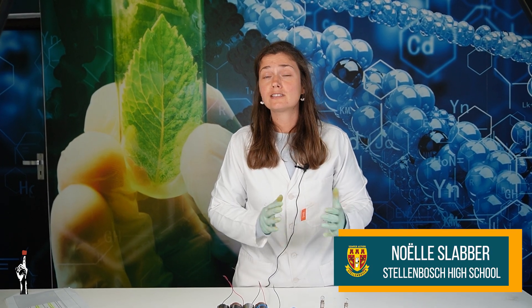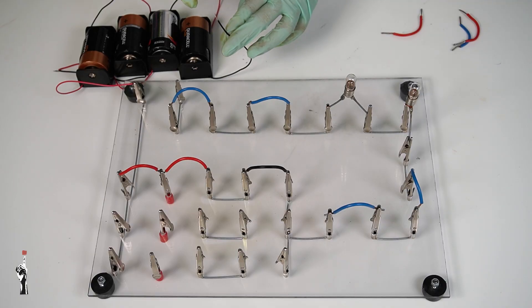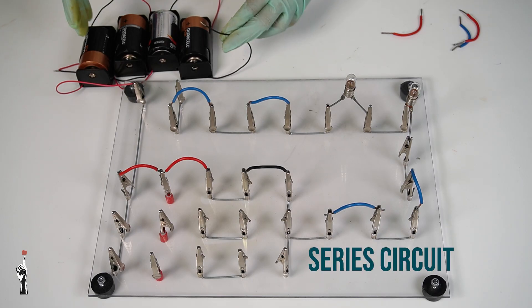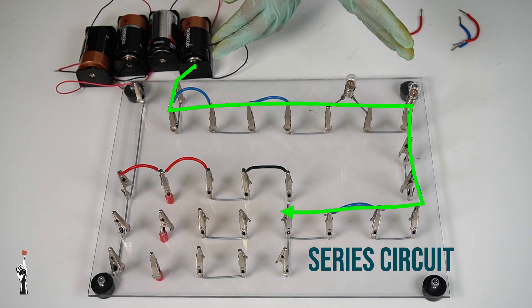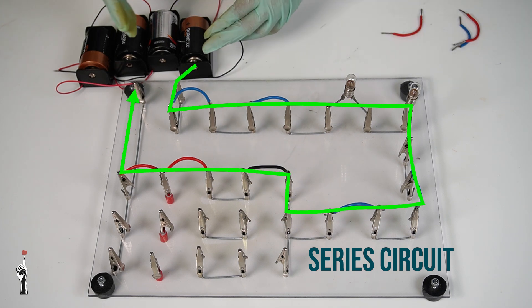Welcome back to the lab. Today, we're going to be looking at a simple series and a simple parallel electrical current. So, at this moment, we have a very basic series setup. It's important to understand it goes from the batteries, the current flows through the two bulbs and then back to the batteries.